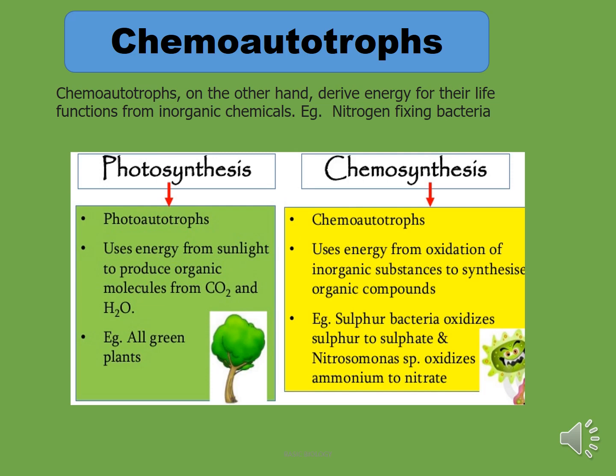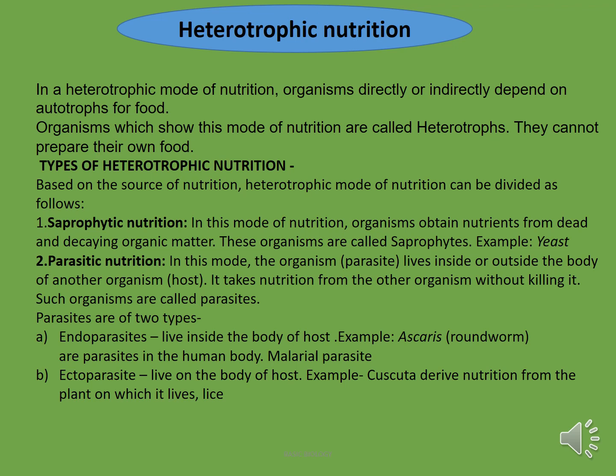Heterotrophic nutrition is the mode of nutrition in which organisms are directly or indirectly dependent on autotrophs. They cannot make their own food; they have to depend on other organisms for their food. Different types of heterotrophic nutrition include saprophytic nutrition. Saprophytic nutrition is the mode of nutrition in which organisms obtain their food from dead and decaying organic matter. These organisms are called saprophytes. All fungi and bacteria are called saprophytes.